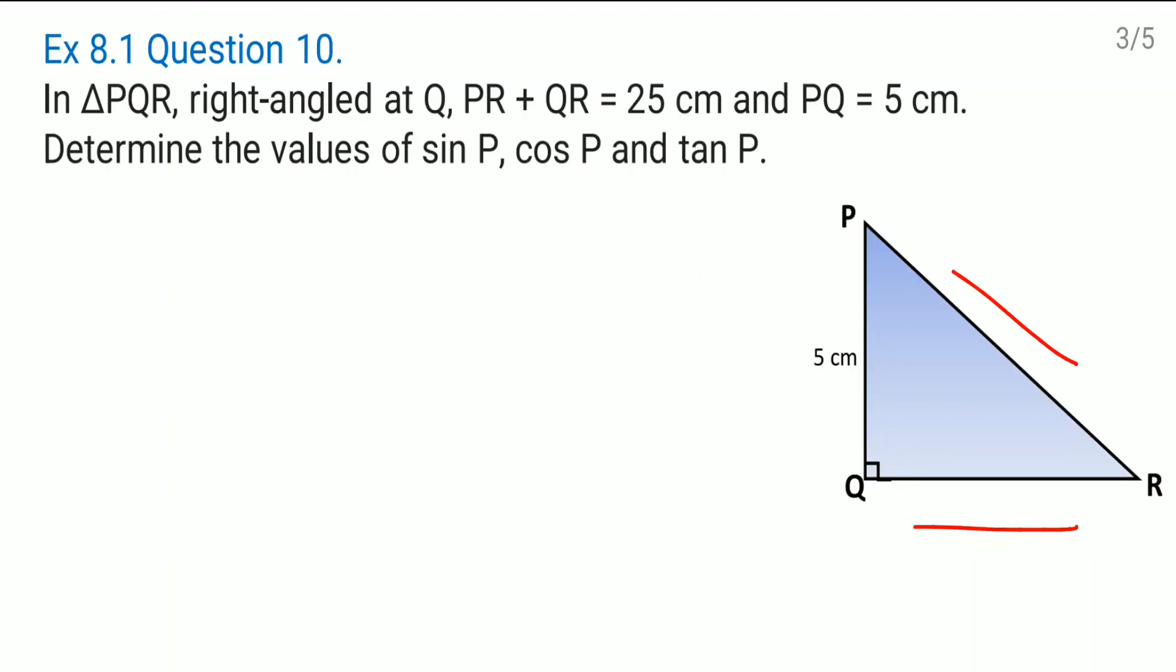So one of them we supposed to consider as X. So let this QR will consider as X. So PR will come as 25 minus X and we are free to use here Pythagoras theorem because it is right angle triangle. Now let QR which is equal to X cm and PR which is equal to 25 minus X cm.